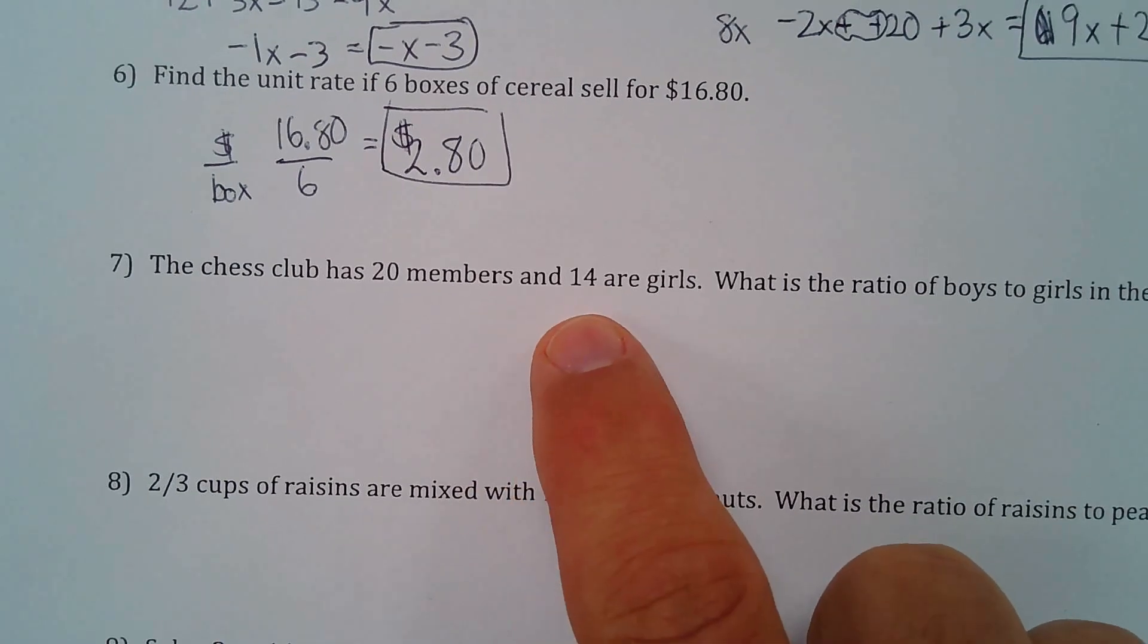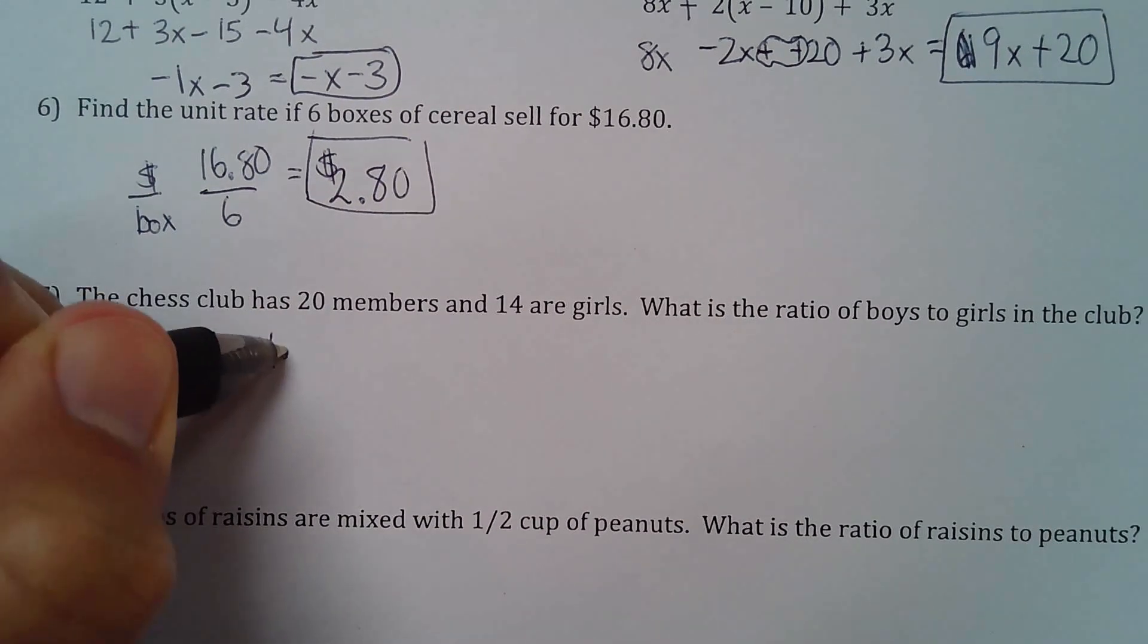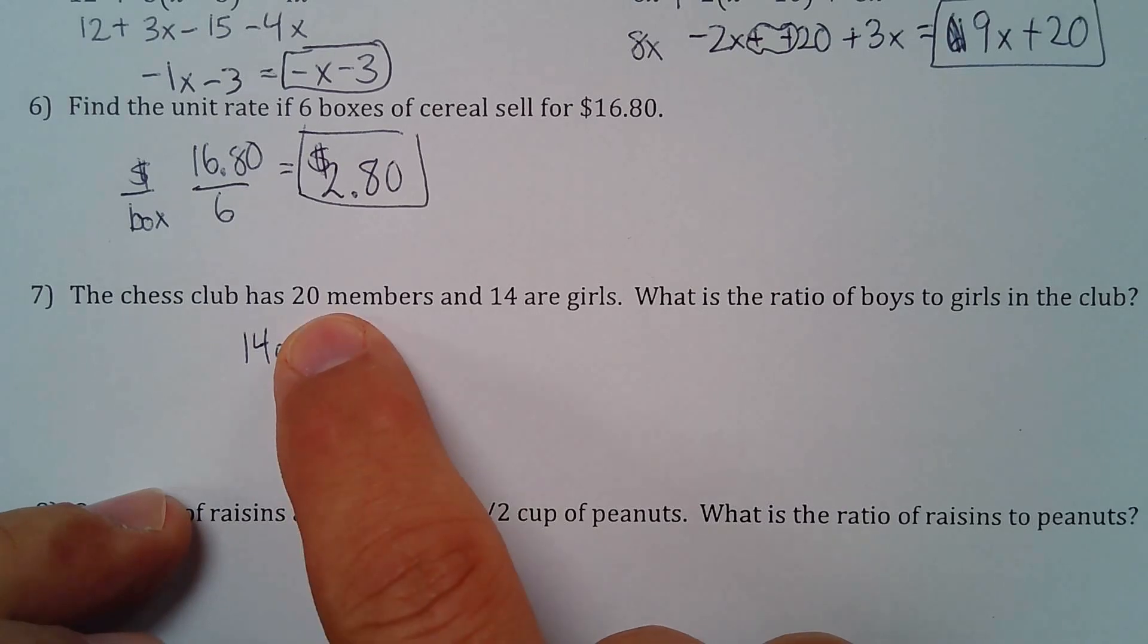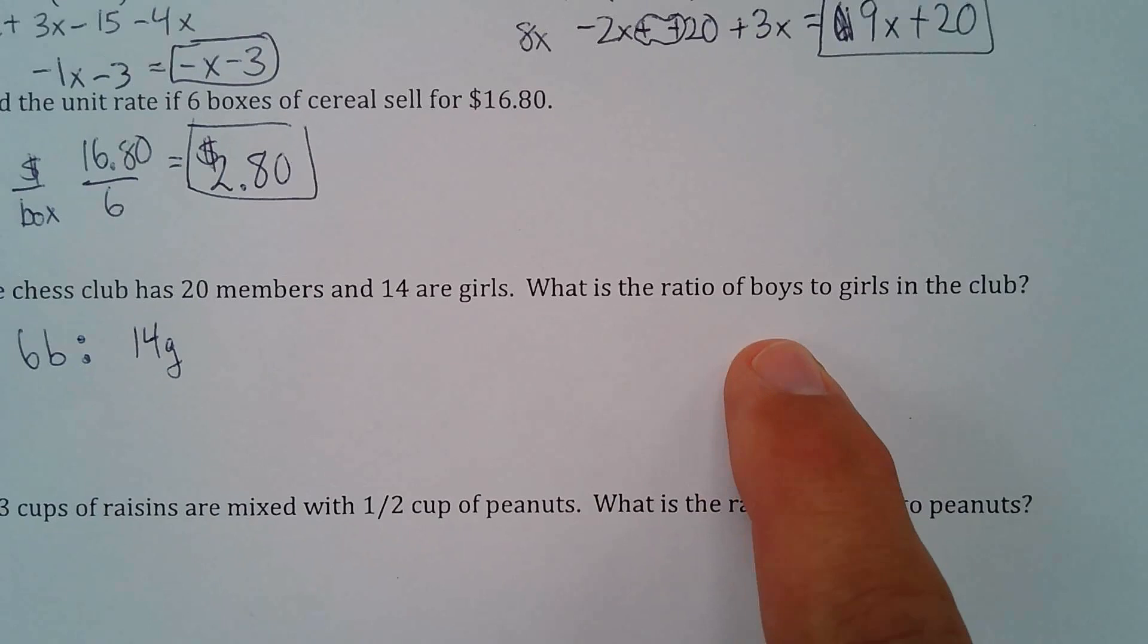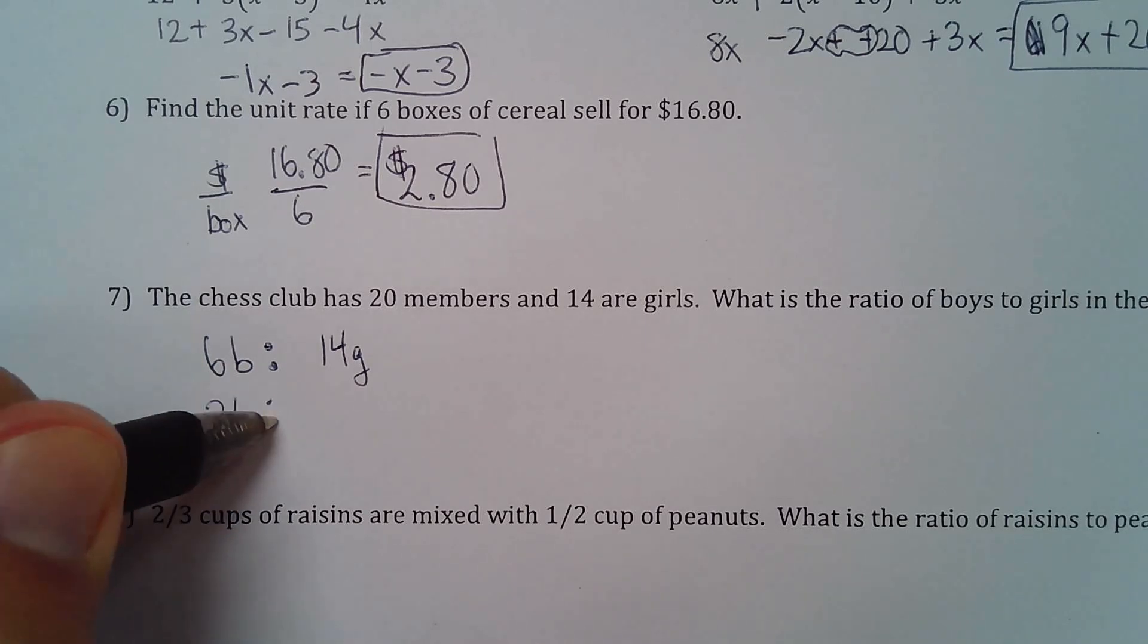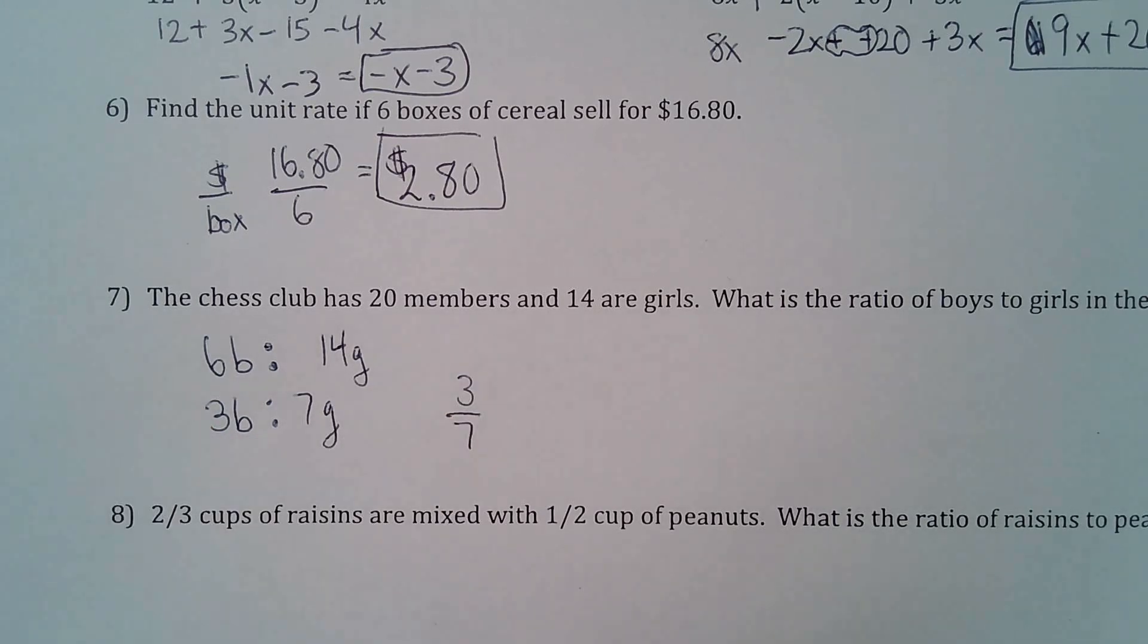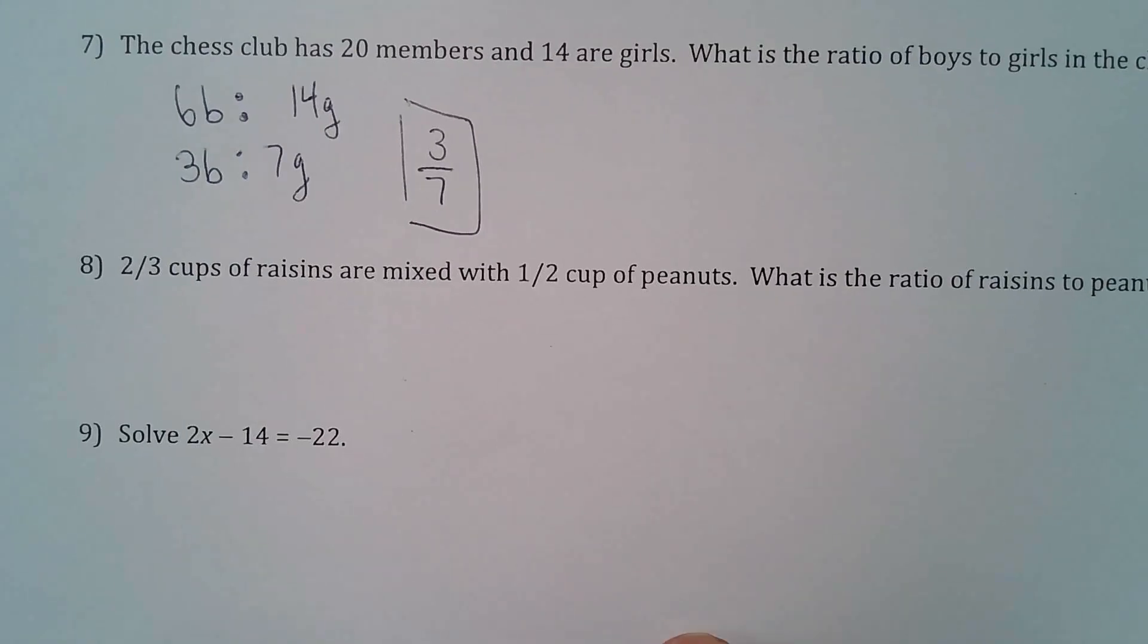Chess club has 20 members and 14 are girls. What is the ratio of boys to girls in the club? So there are 14 girls. Ratio of boys to girls. So if there's 14 girls, that means there's 6 boys because 20 minus 14 is 6. So 6 boys to 14. What's the ratio of boys to girls? There it is. 6 boys to 14 girls. We could simplify this probably, take half of both of these, and we have 3 boys to 7 girls. We could also write this as 3 to 7 as a fraction.